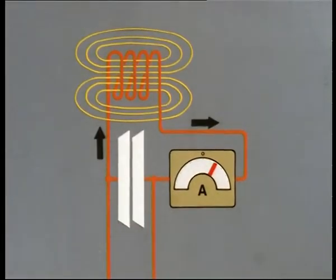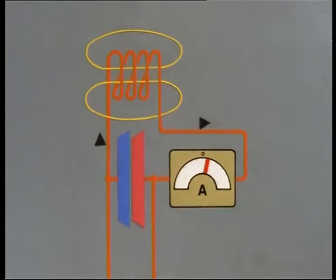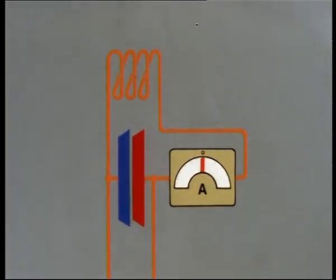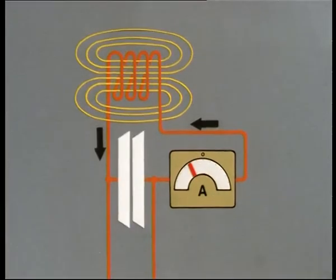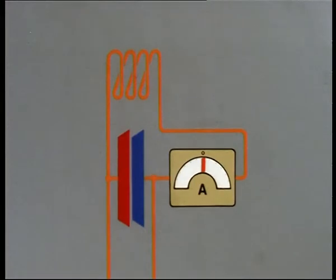A current is flowing, which now is highest and then decreases to zero. With the current, a growing and vanishing magnetic field is combined. How can this system be supplied with energy?